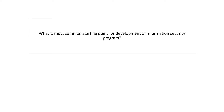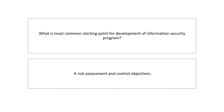What is the common starting point for development of an information security program? The answer is a risk assessment and control objectives. He needs to be aware of what the risks are and what the control objectives are. These are the starting points for an information security program.